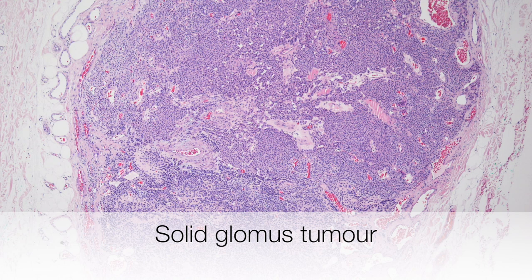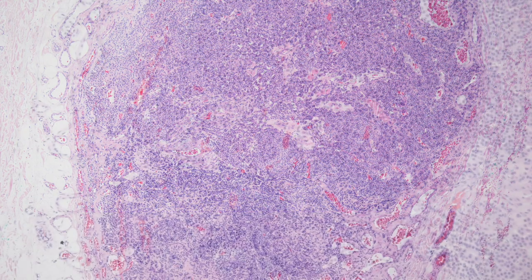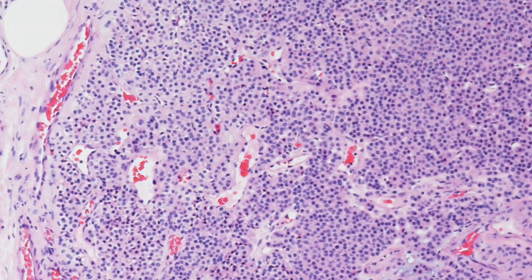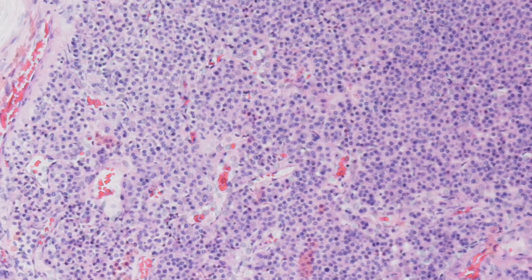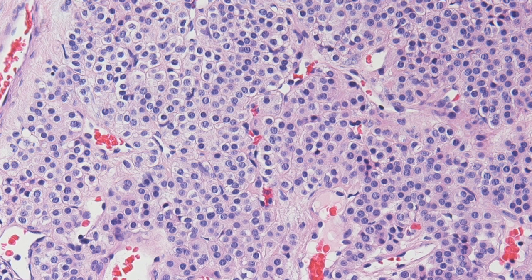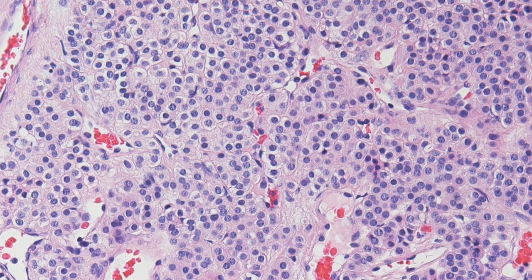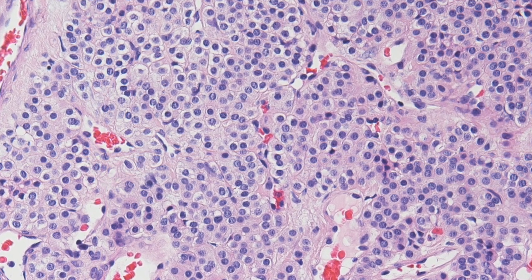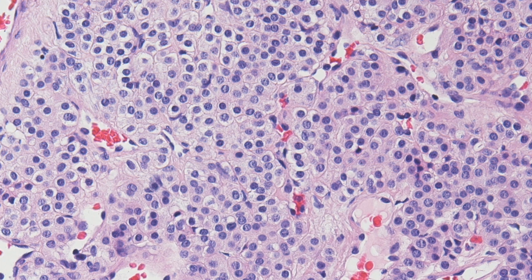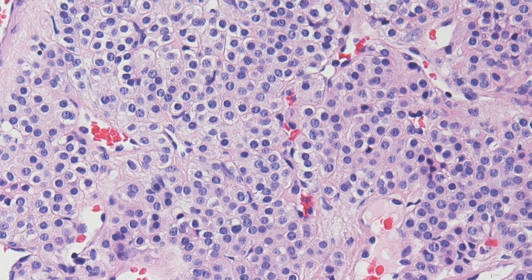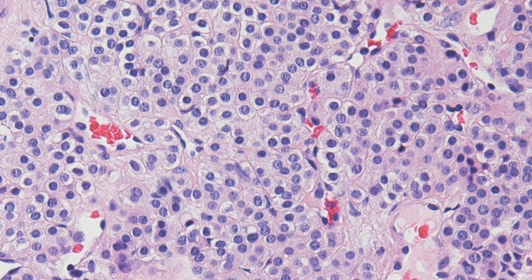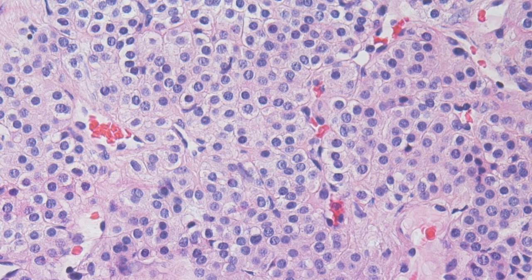This glomus tumour is composed of solid sheets of glomus cells, so this is a solid glomus tumour. At higher power, the pale pink staining cytoplasm can be appreciated and the nuclei are regular and round. The cell borders are also well defined.